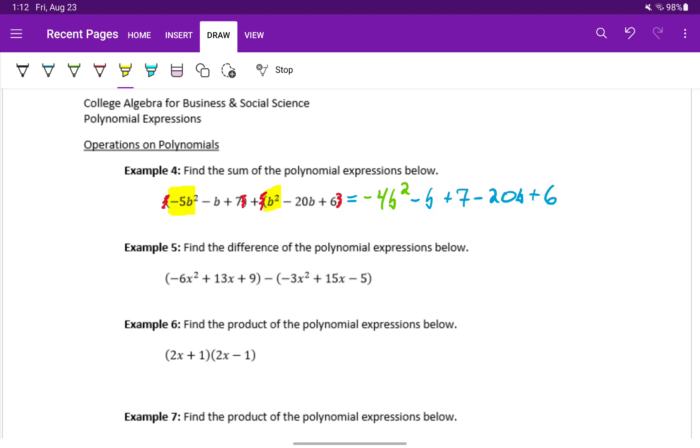Then we can either continue to take this one step at a time, or as we grow more comfortable with this, we can knock out multiple steps at a time. For instance, we can combine minus 1b and minus 20b, and we can combine plus 7 and plus 6, since those are like terms. To get negative 4b squared minus 21b plus 13.